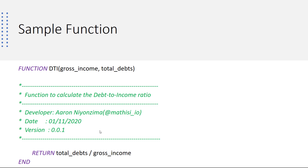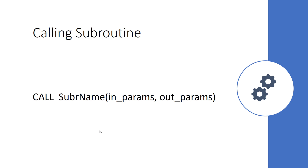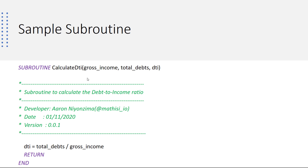Let's see how to use a subroutine and how to use a function. Both subroutines and functions cannot be invoked from jshare, so we need to invoke a subroutine or a function from another subroutine or from programs. To invoke a subroutine, we write the keyword call followed by the name of the subroutine and in parentheses we put all the parameters, using the same signature as defined.